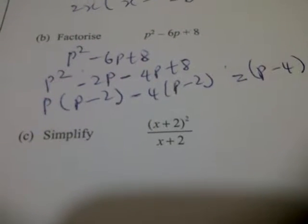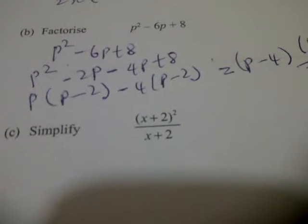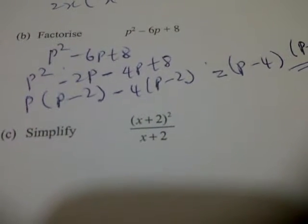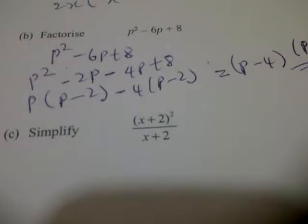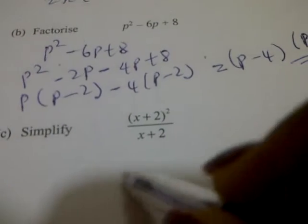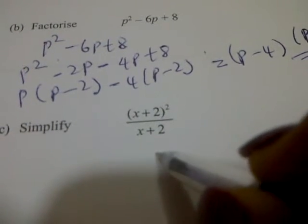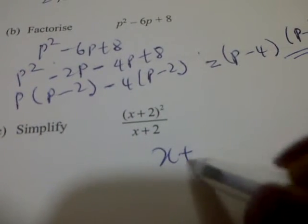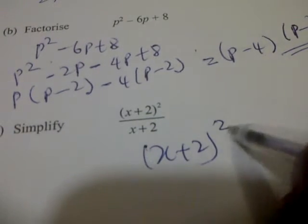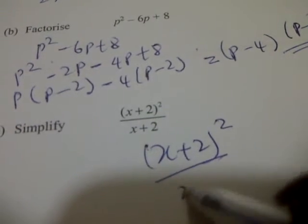Question number 15 says: simplify x plus 2 all squared divided by x plus 2. That is, x plus 2 all squared divided by x plus 2.